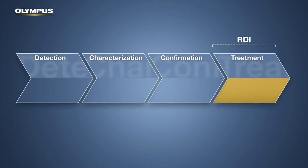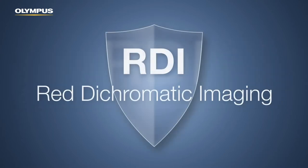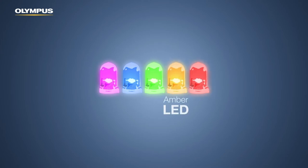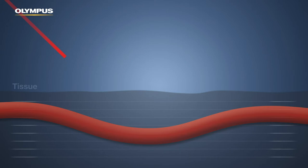RDI, which stands for red dichromatic imaging, is designed to enhance the visibility of deep vessels and bleeding points during endoscopic treatment. RDI uses an additional amber LED, and red light penetrates deeper into the tissue compared to green light.